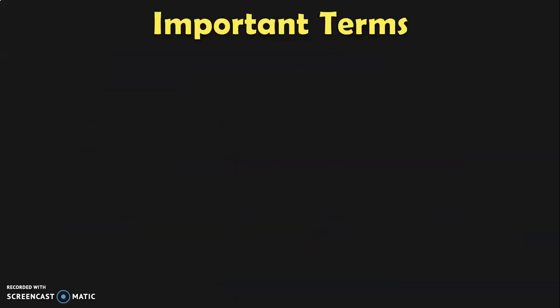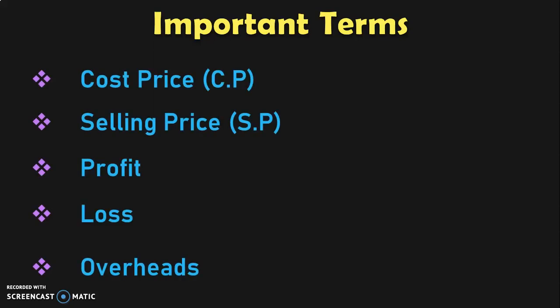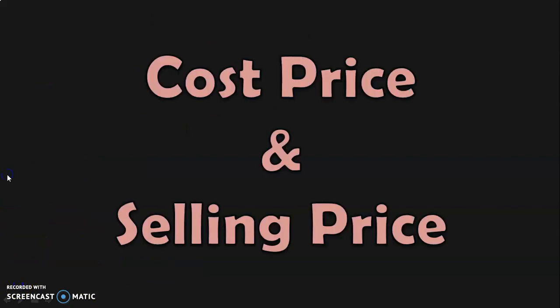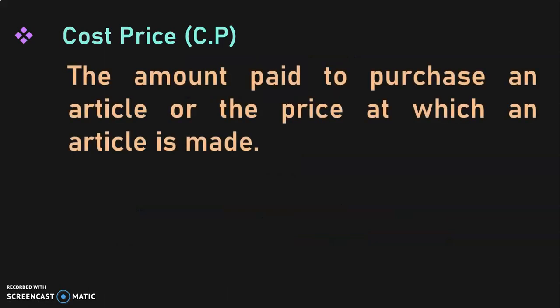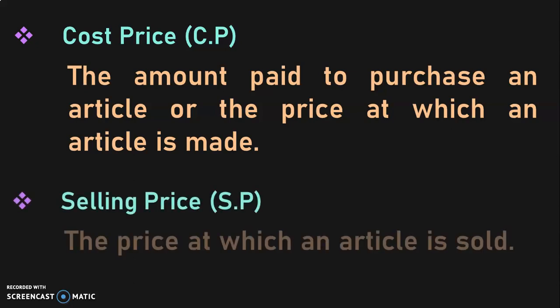The important terms that you will be learning with respect to profit and loss are cost price, selling price, profit, loss and overheads. Cost price is the amount paid to purchase an article, or the price at which an article is made, is called the cost price. Selling price is the price at which an article is sold, called its selling price.